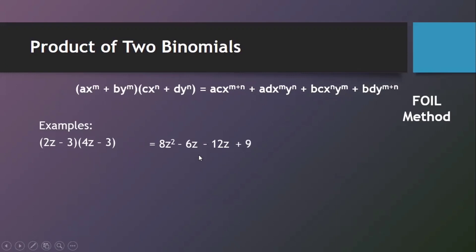Combining the like terms, negative 6Z minus 12Z gives us negative 18Z. So the final answer is 8Z squared minus 18Z plus 9.